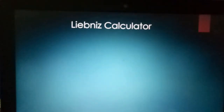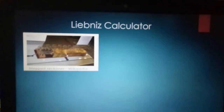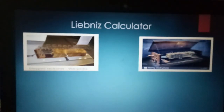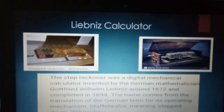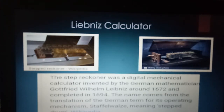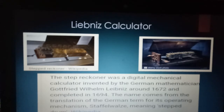The next device in the chapter is the Leibniz Calculator. Wilhelm von Leibniz, a German mathematician and philosopher, designed a mathematical calculating device called the Stepped Reckoner in 1671.